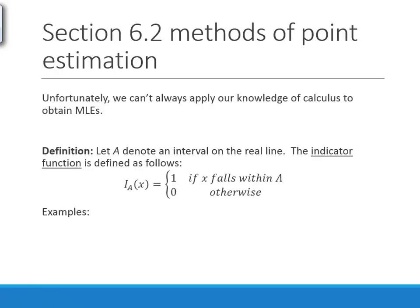Unfortunately we can't always use calculus to find maximum likelihood estimates — and this comes up on your homework. To work around this, we introduce the indicator function. For a set A on the real line, the indicator function I sub A of x equals one if x falls within A, and zero otherwise.